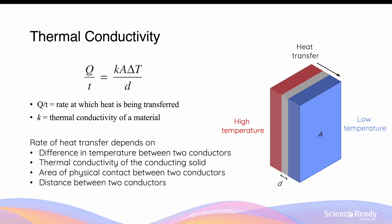Q over t, which is the rate of heat transfer, is equal to K, which is the thermal conductivity of the material that heat is transferred through. A is the surface area between two conductors that the heat is transferred between. Delta T is the difference in temperature between these two objects. And finally, this is all divided by D, which is the distance between the two conductors.